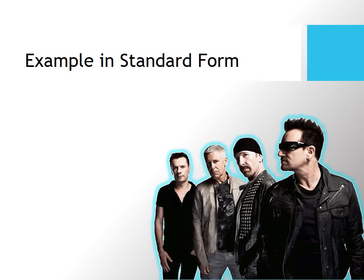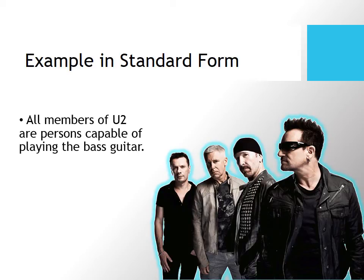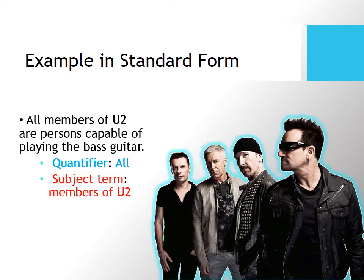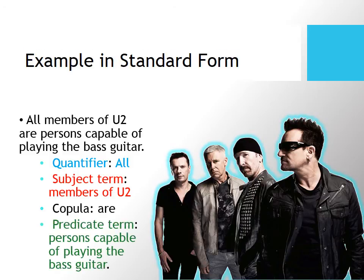Let's try an example. Suppose somebody says, 'all persons in the rock band U2 are persons capable of playing bass guitar.' You can divide this into standard form easily: the quantifier is 'all,' the subject term is 'members of U2,' the copula is 'are,' and the predicate term is 'persons capable of playing bass guitar.' When these terms are highlighted in different colors, you can easily see how the sentence divides into all the elements we just discussed.